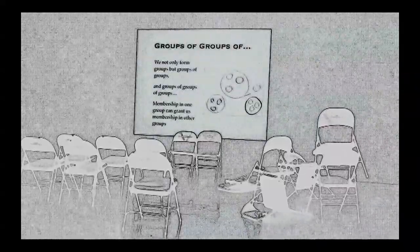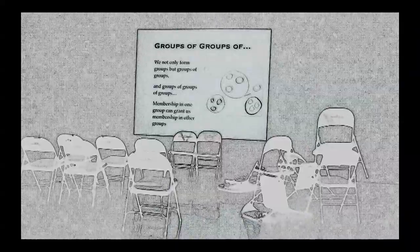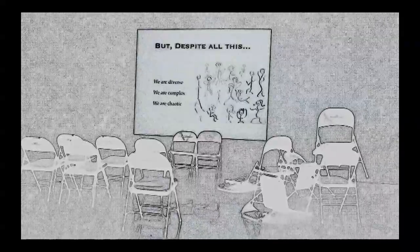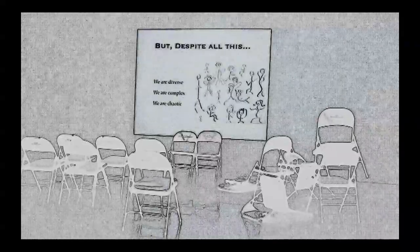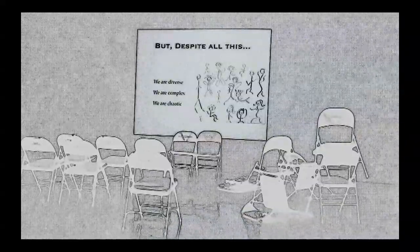Some groups are more fluid, while others are more fixed. We not only form groups, but groups of groups and groups of groups of groups. Membership in one group may grant us membership in other groups. But despite all this, we are diverse. We are complex. We are chaotic.